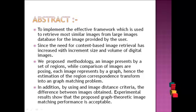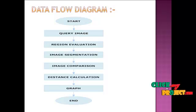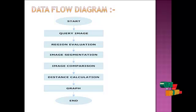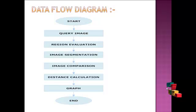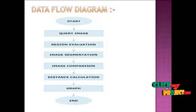Let's see the data flow diagram of our project. As mentioned, the user needs to provide an input query image. After providing the query image, the regions present in it will be analyzed. Then, the regions will be segmented into different parts based on colors. After performing the image segmentation, the histogram values of every region will be calculated. After acquiring the histogram values and distance values of the regions, the image comparison between the query image and each image from the database will be carried out using the Euclidean distance formula.